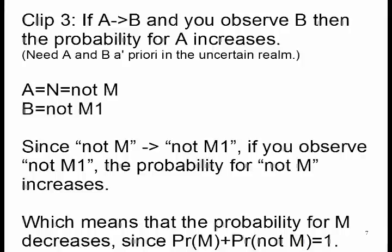As you may remember, if we have two statements A and B, and if A implies B and you observe B, then A becomes more probable. You can now identify A with the alternative model N, while the observation B is that M1 has been falsified, or simply NOT M1. Clearly, N equals NOT M implies NOT M1, and that's the proof.